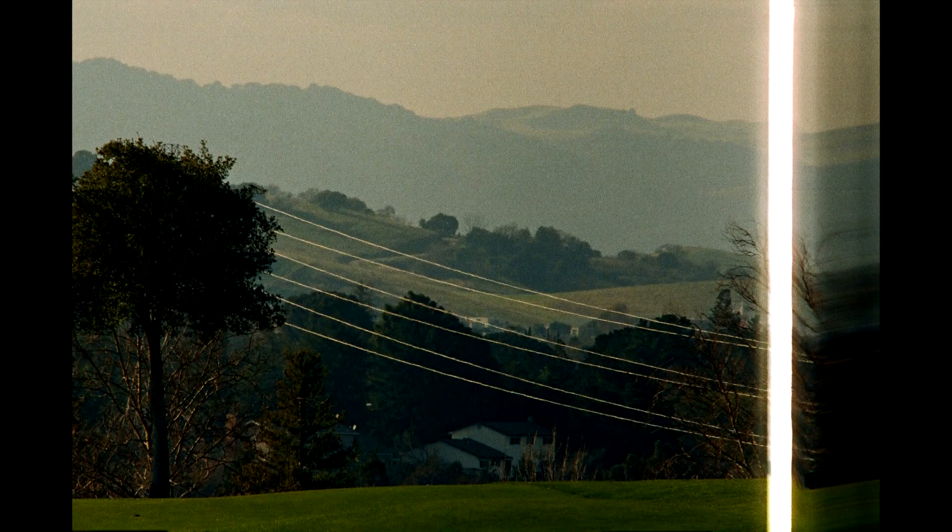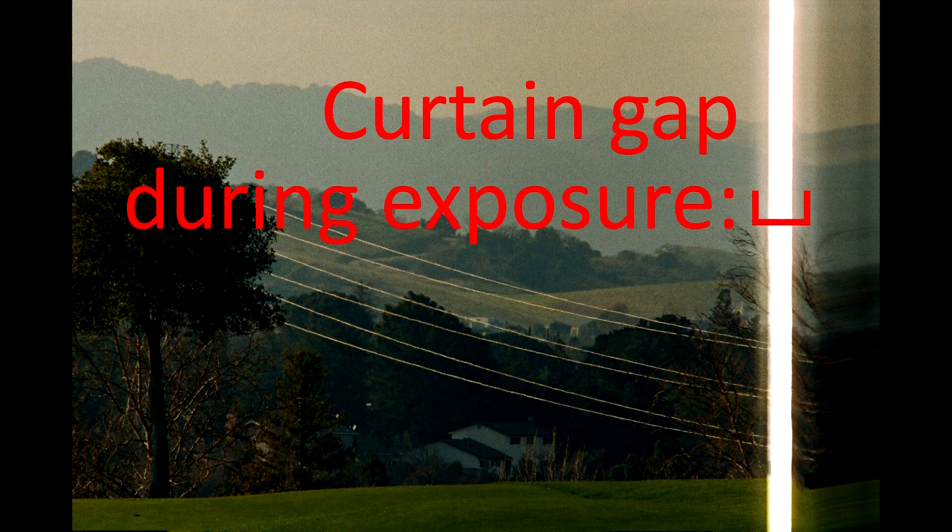Here's a fun fact about the bright white band left by incomplete curtain travel: the width of that bright white band is the width of the gap between the curtains for that exposure time. In this sample image the exposure was one one-thousandth of a second, so you can see the curtain gap for this camera's fastest shutter speed.